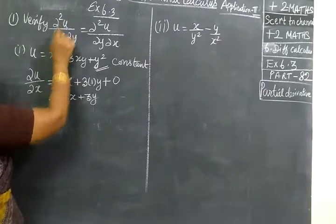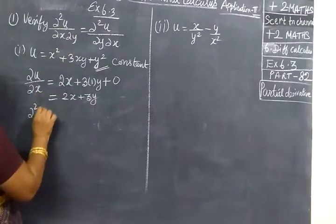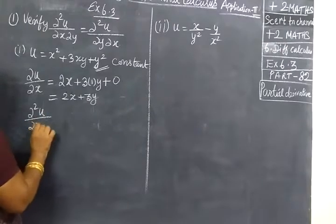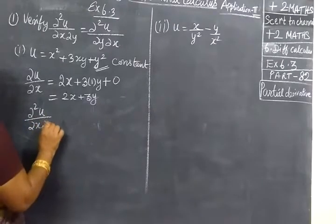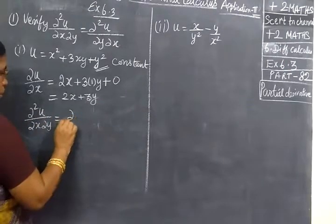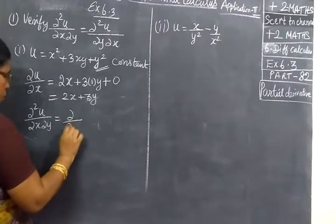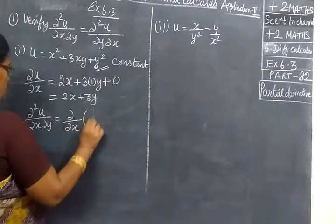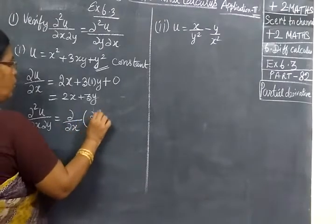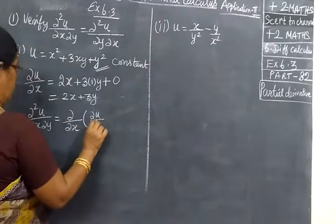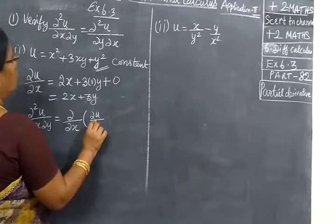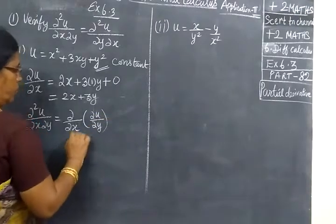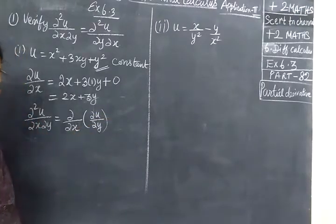Next, we are going to find ∂²u/∂x∂y. We compute this as ∂/∂x of (∂u/∂y), which we will find later.